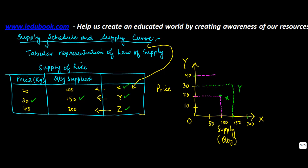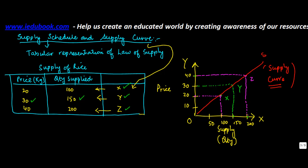Drawing reference lines for each point and connecting X, Y, and Z gives us the supply curve — the line showing supply at various prices. We have assumed throughout that the other factors remain the same.